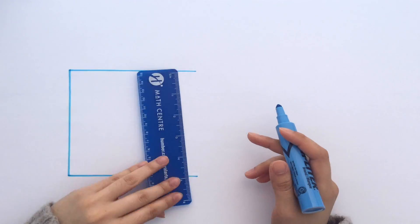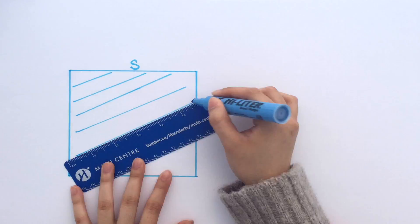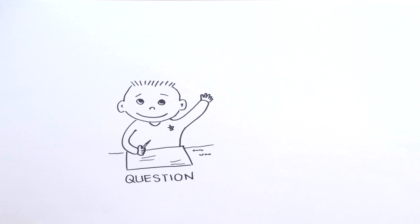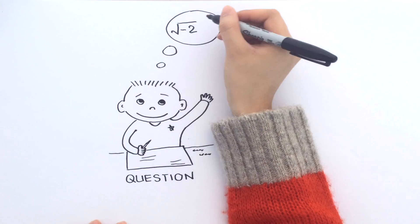The square root of A is defined as one number squared gives us A. Now think about how do we find the square root of a negative number, such as the square root of negative 2.